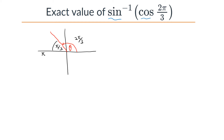We also need to determine whether cosine(2π/3) is positive or negative. Using the ASTC rule: in the second quadrant, only sine and cosecant are positive. Since cosine is not sine or cosecant, cosine must be negative in the second quadrant.